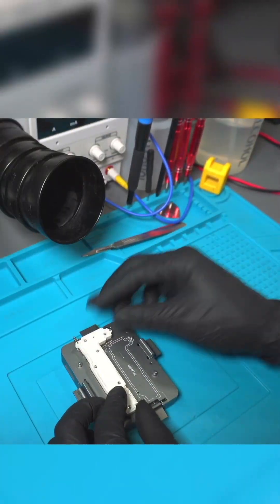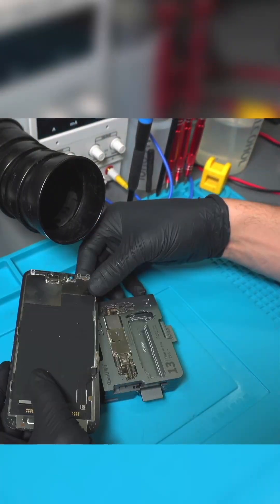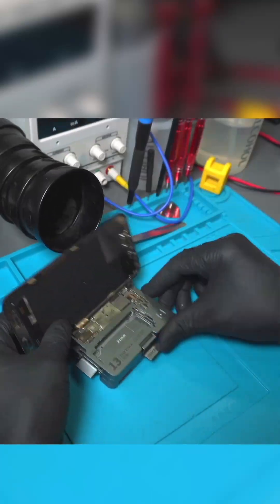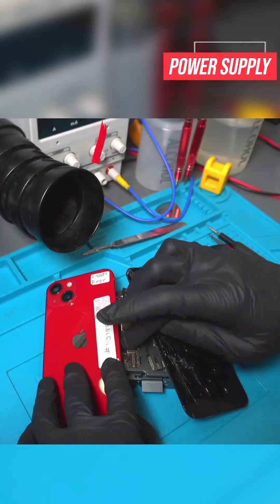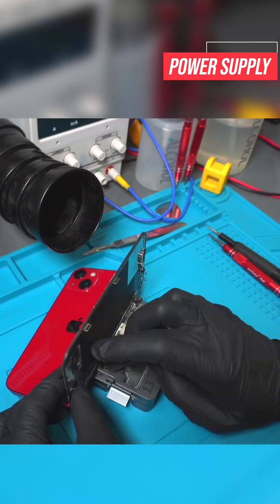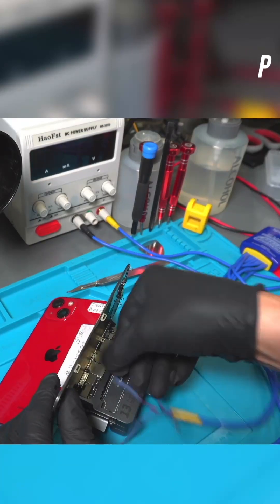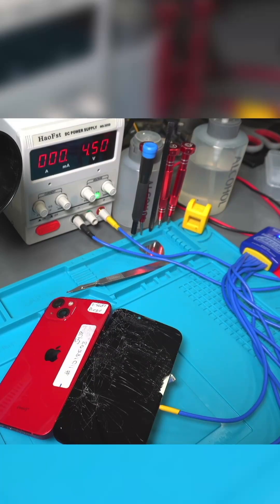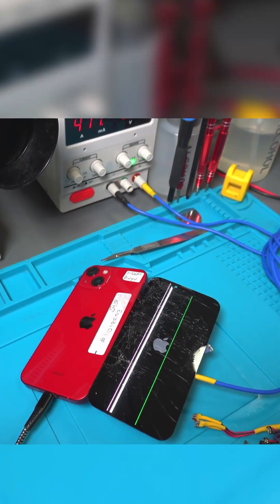Now we have this tool that allows us to test the two motherboards together. It will tell us if the problem was a connection issue or if there was another source to the problem. We connect the screen, the charging port, and use the power supply as our battery. And once connected to the charger, we turn on our device.